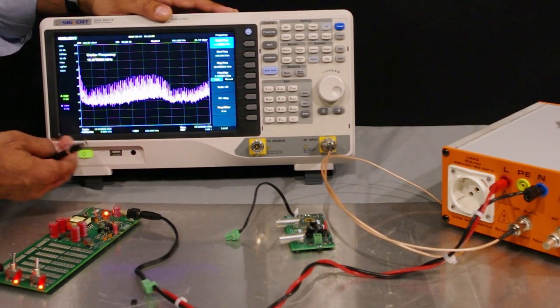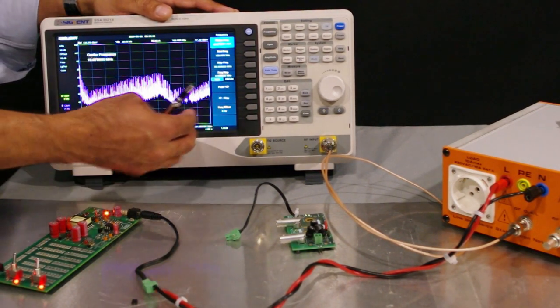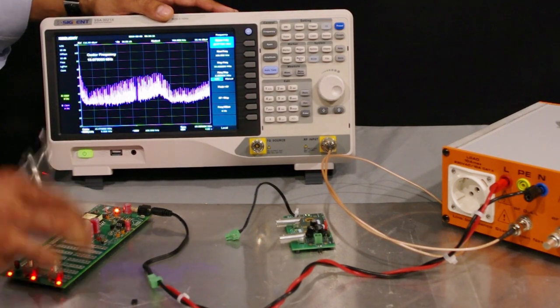At the moment I'm looking at a frequency range of 150 kilohertz to 30 megahertz, but this is too wide, so I need to narrow down the range a little bit so I can see the spikes.